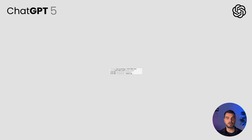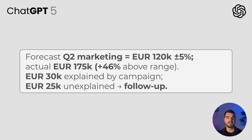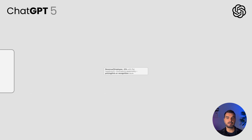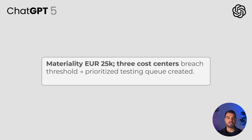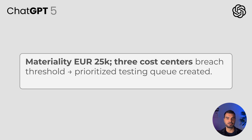Results: the expectation model forecasted Q2 marketing expenses of 120,000, but actual spending reached EUR 175,000 — 46% above the expected range. Variance explained partially by campaign launch; the rest is unexplained, requiring follow-up. Revenue per employee dropped 12% despite constant headcount, contradicting seasonality trends. ChatGPT quantified the materiality threshold at EUR 25,000; three cost centers exceeded this benchmark.